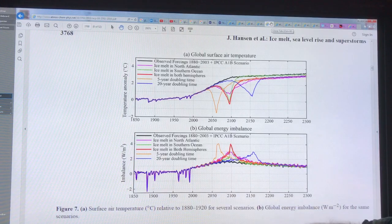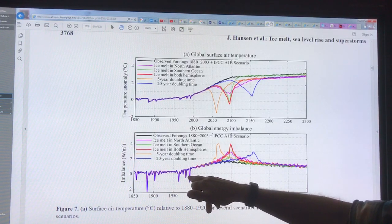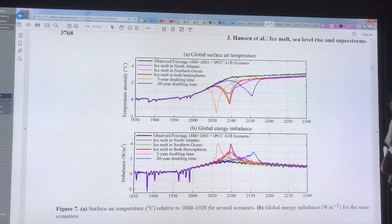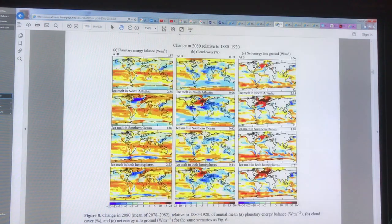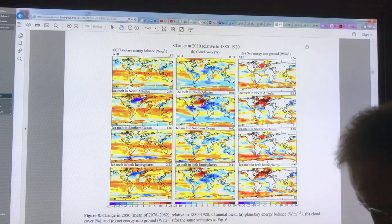The dips here are large. This is Mount Pinatubo, this is Agung, El Chichón in Mexico—these are different volcanoes that put up ash and cause cooling of the planet temporarily for a few years if the volcanoes are large enough to put sulfur dioxide up into the stratosphere.